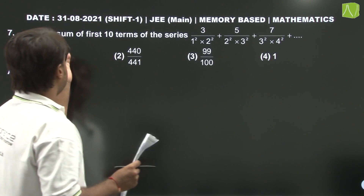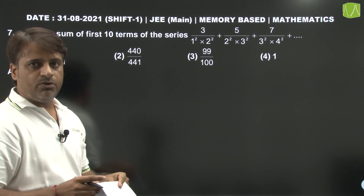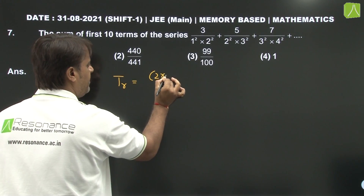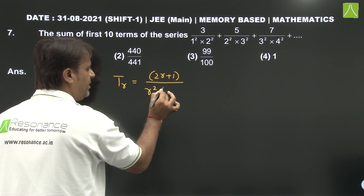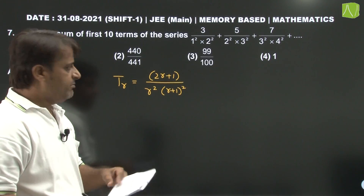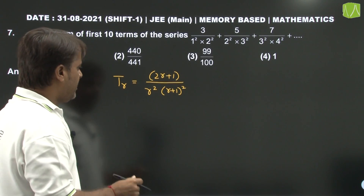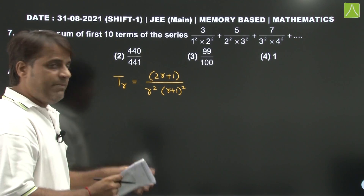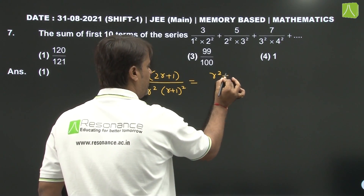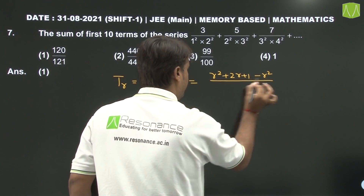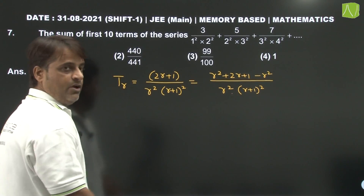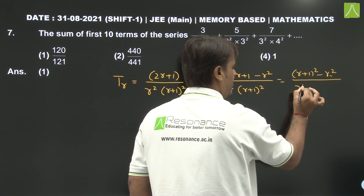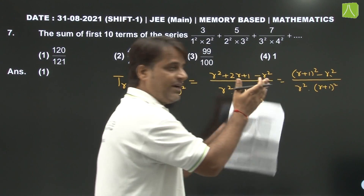Question number 7: Find the sum of first 10 terms of the series. General term T(r) has numerator 2r plus 1 and denominator r squared times (r plus 1) whole squared. Since the denominator grows rapidly, the target is to break it into a telescoping difference. The numerator can be written as (r plus 1)^2 minus r^2, i.e., r squared plus 2r plus 1 minus r squared, divided by r squared times (r plus 1) whole squared.